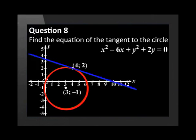Find the equation of the tangent to the circle x² - 6x + y² + 2y = 0.